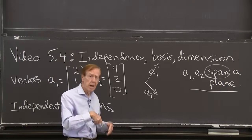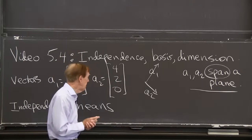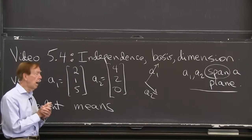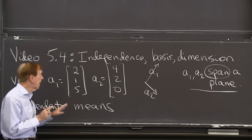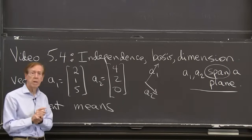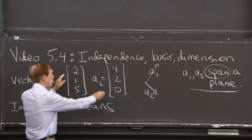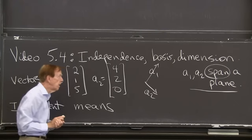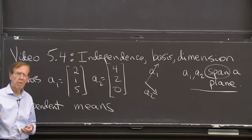Now let me bring in a third vector in three dimensions. Well, what shall I take for that third vector? Suppose I take a1 plus a2 as my third vector. So 6,3,5. What about the vector 6,3,5?